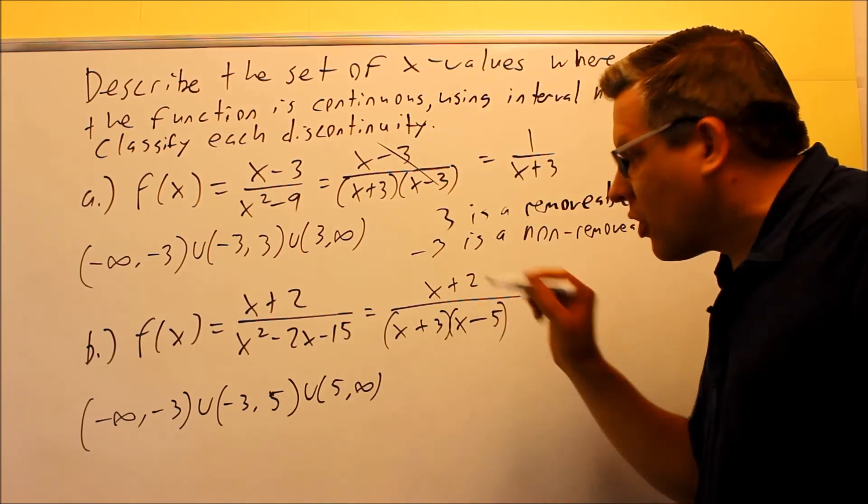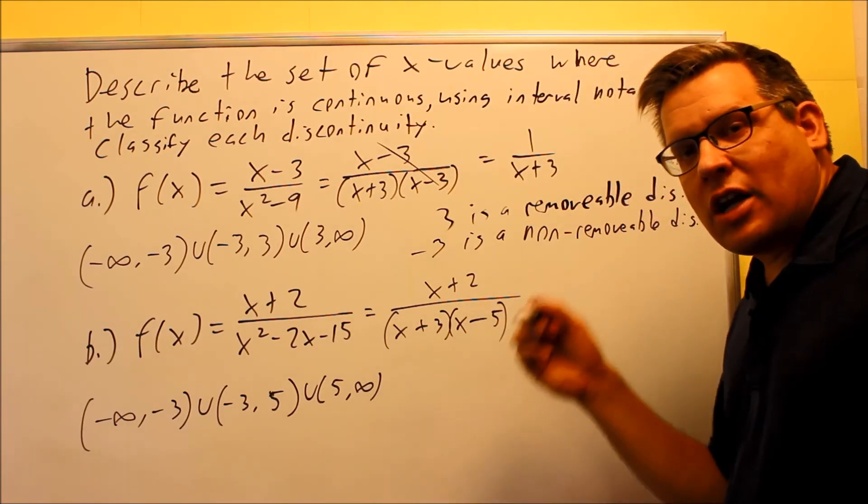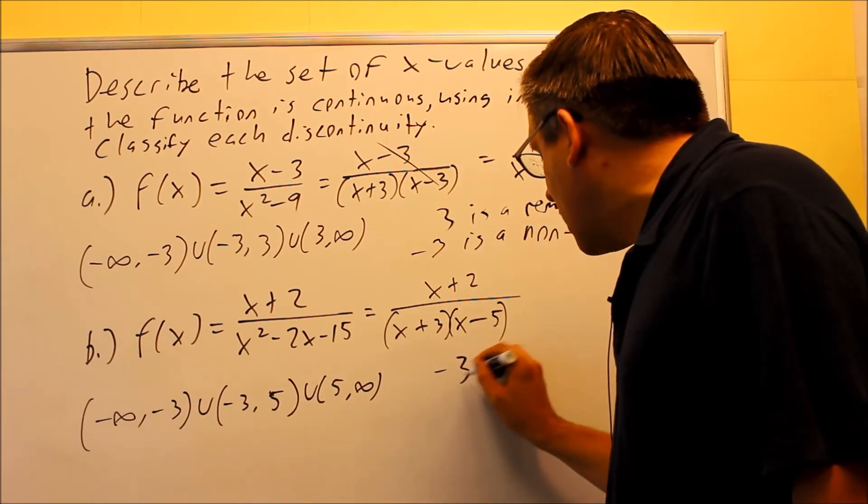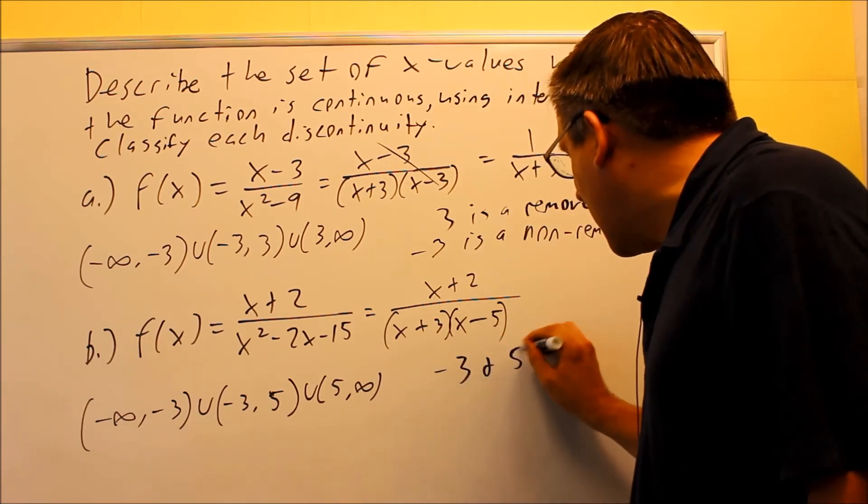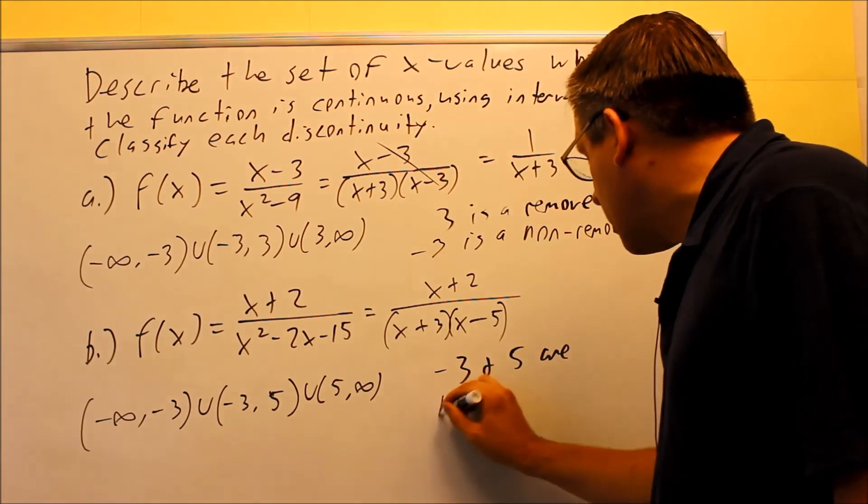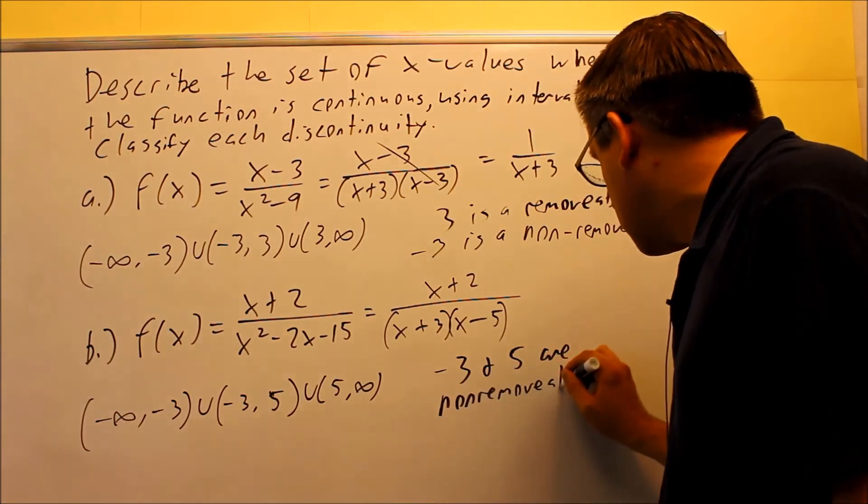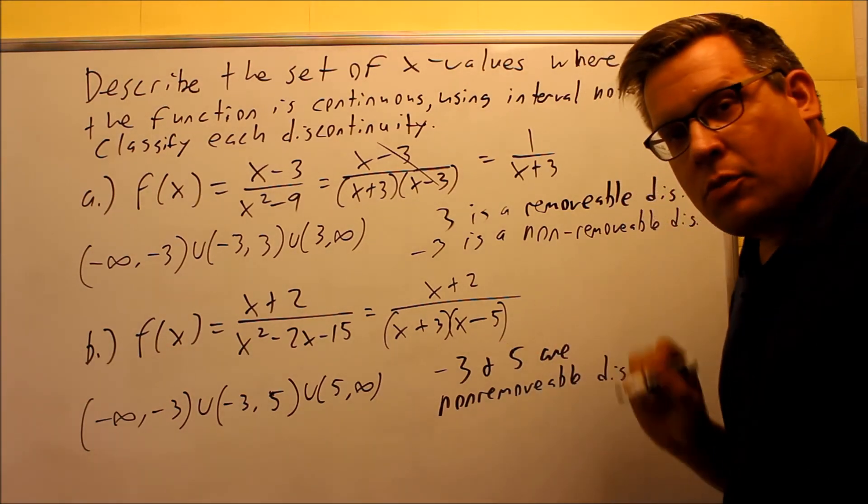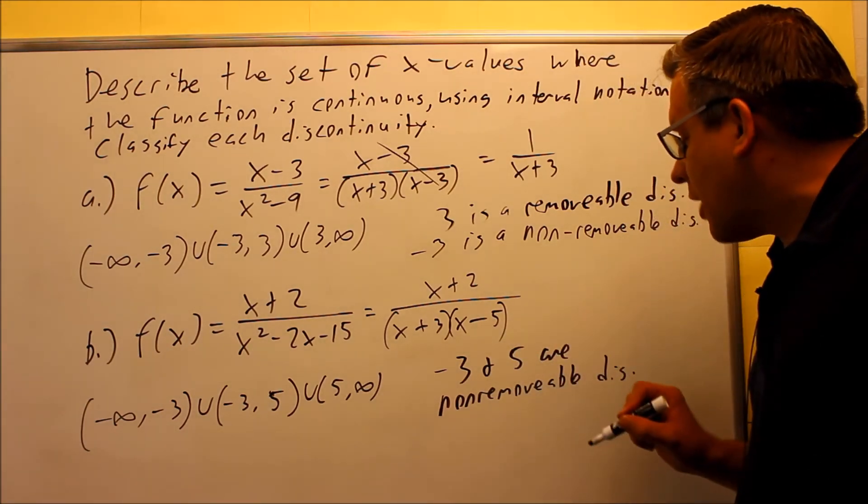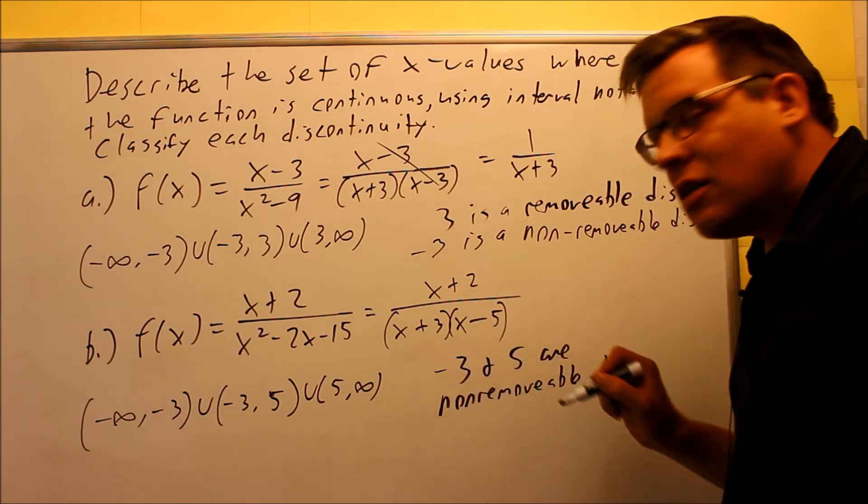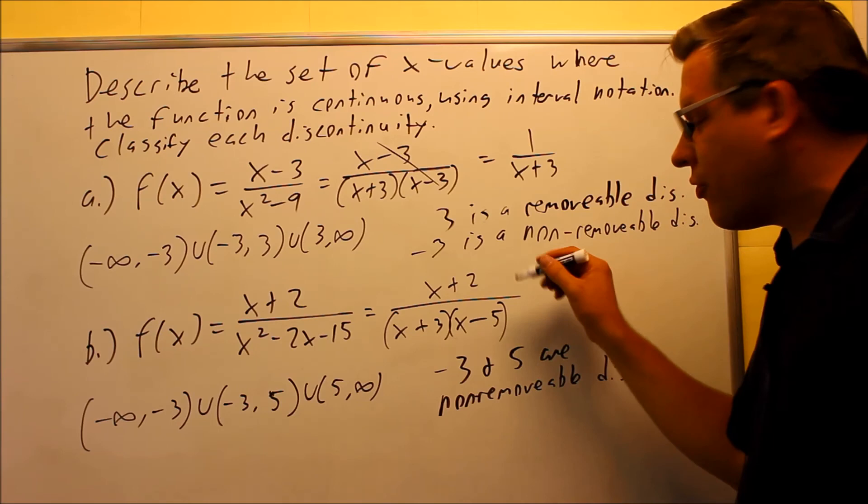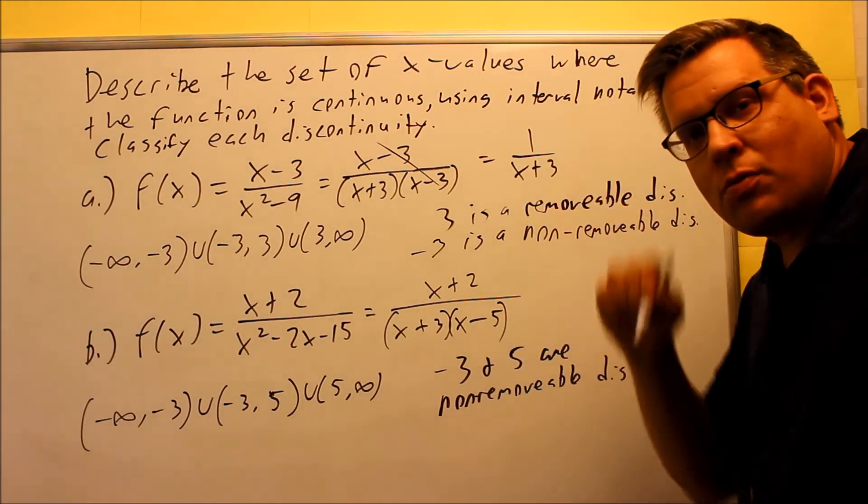So because of that, if you have a vertical asymptote there, that's considered a non-removable discontinuity. So you're going to say negative 3 and 5 are non-removable discontinuities. Both of them are going to be considered non-removable because, again, they make up a vertical asymptote. So therefore, because of that, nothing you can do to plug in that hole, non-removable.